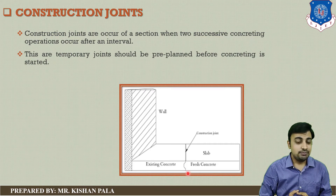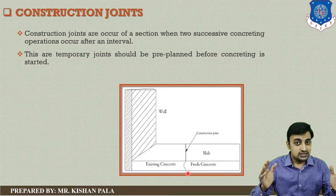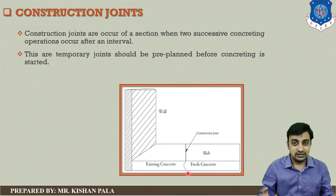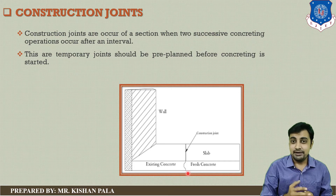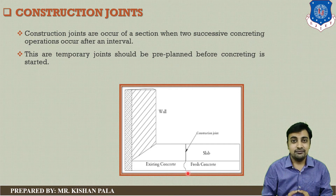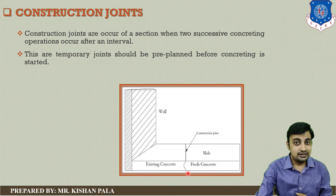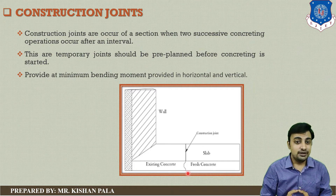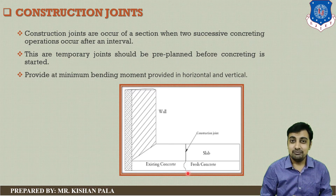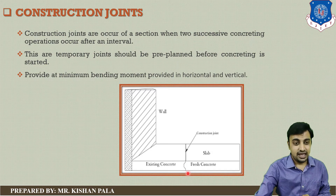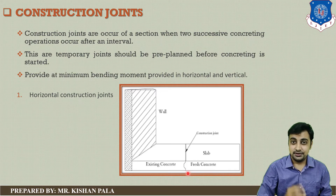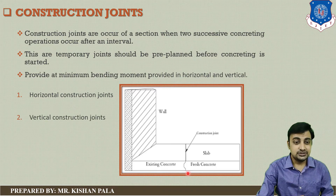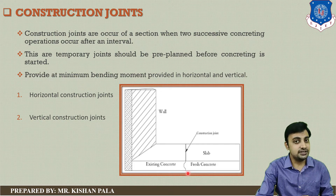These are temporary joints that should be pre-planned before concreting starts. We can calculate all the events in the structure for a particular project, identify the events, time, and arrangement, and then pre-plan for the type of joints. Construction joints provide a minimum bending moment in the horizontal and vertical direction — remember, they must be provided at the point of minimum bending moment so they can resist the forces. Construction joints are classified into two types: horizontal construction joints and vertical construction joints.